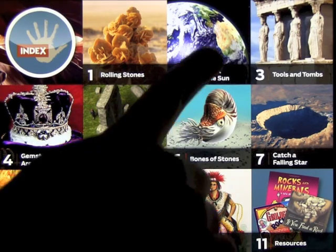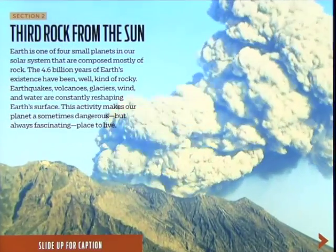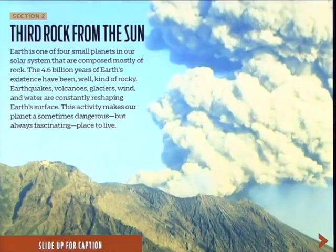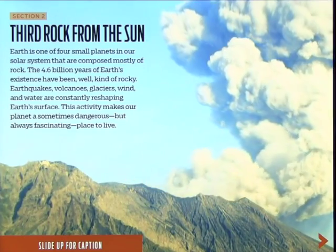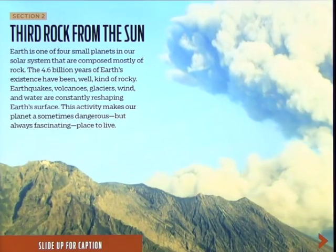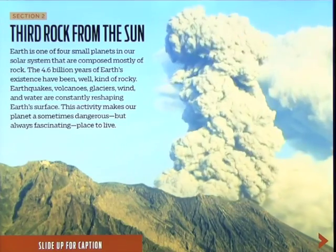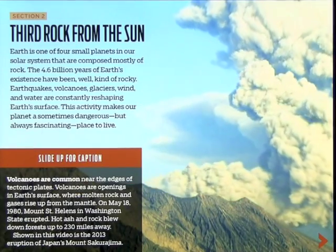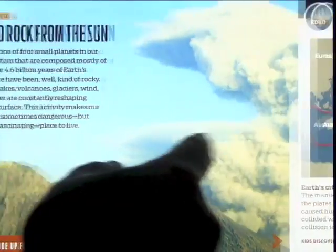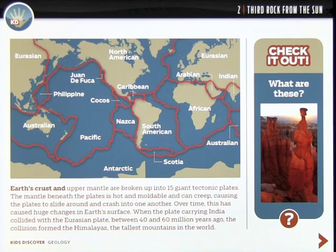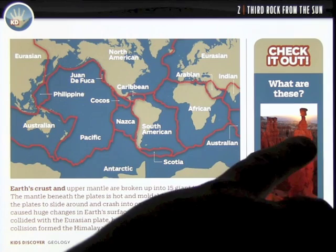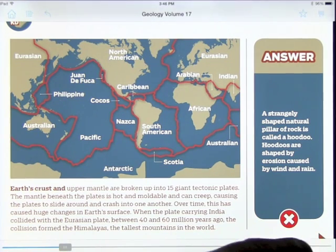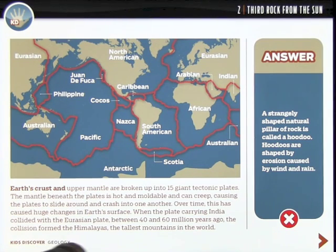It really is quite an amazing app. When we come to section two, there's an opening video, some information about volcanic eruptions, and to go through to the next page you simply swipe. Lots of the pages have interactive parts to them — like 'what is this picture?' — and then you can click on it to get the answers. If you click the arrow down here it brings up where you are within the book and you can use the slider to navigate.